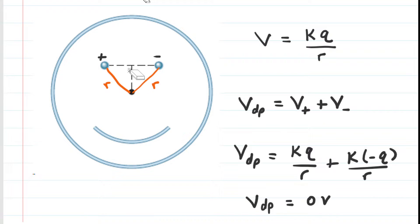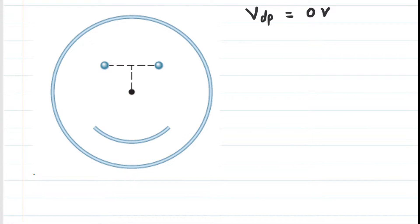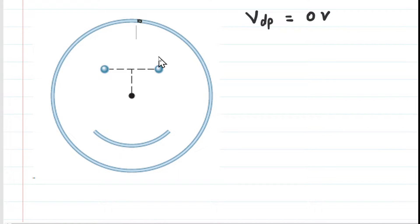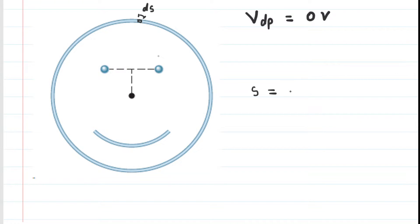Now we'll analyze the potential produced by the large circular head. To understand that, we select a tiny portion of the circular head — a differential element, basically a little slice of that large circular ring. Because it's a slice, we use differential notation. This little length is actually going to be an arc length because it's curved, located on a curved circle. We typically use the letter S for arc length, but because it's a tiny arc length, we call it dS.